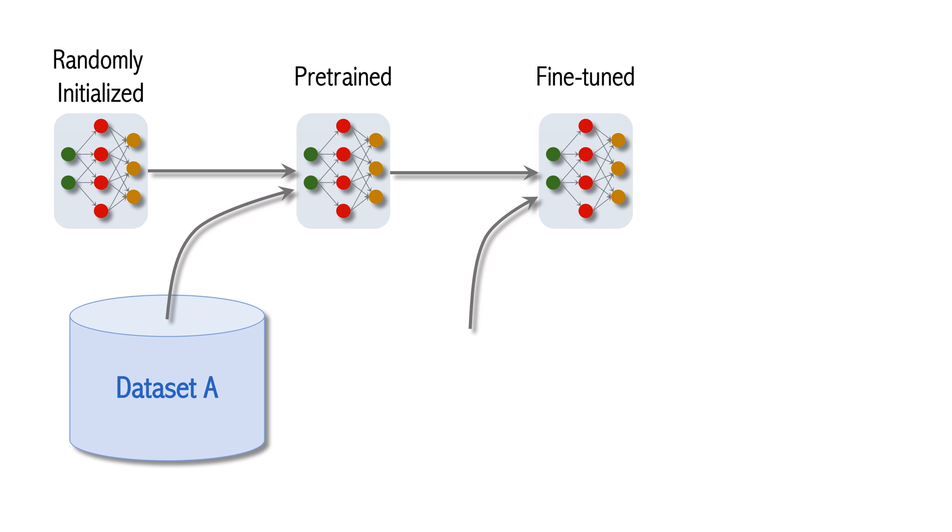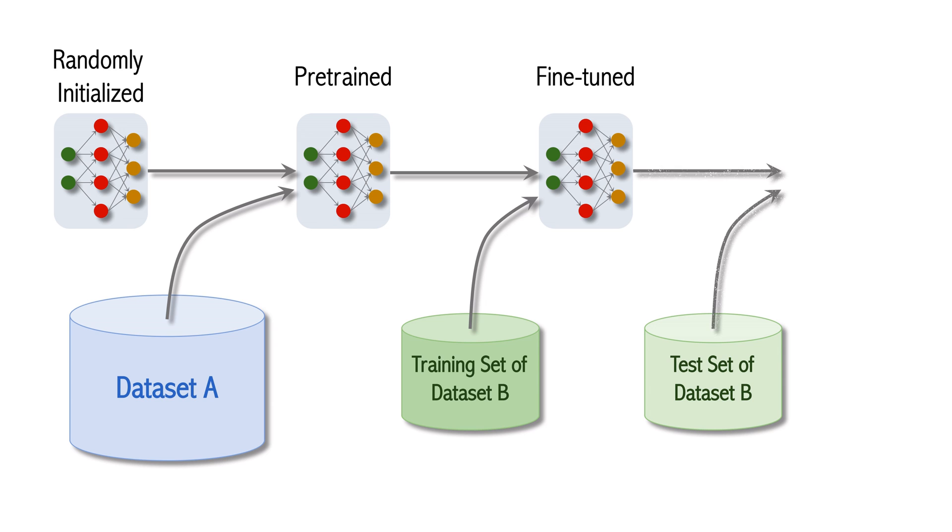Dataset B is the target dataset. For example, if the task is image classification on ImageNet, then dataset B contains the 1.3 million training images of ImageNet. Finally, evaluate the model on the test set of dataset B. We get the test accuracy. The number indicates how good the model is.